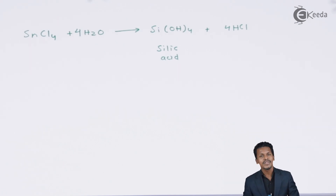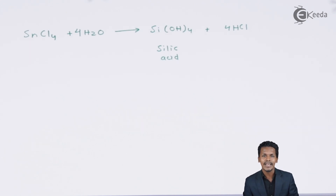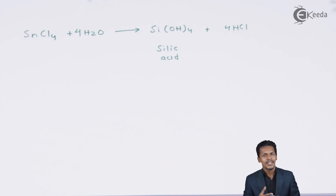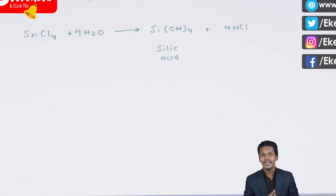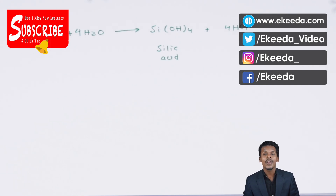This was the variation in reactivity I was discussing. Thank you friends for watching this video — I hope you understood the various chemical reactivities of Group 14 elements towards different chemicals like oxygen, water, and halogens. Please share this video with your friends and don't forget to subscribe to the channel.